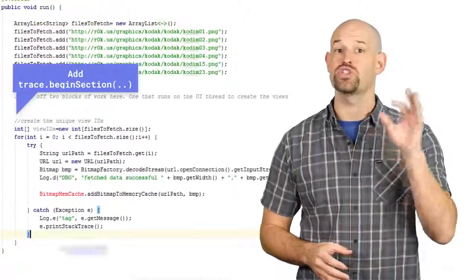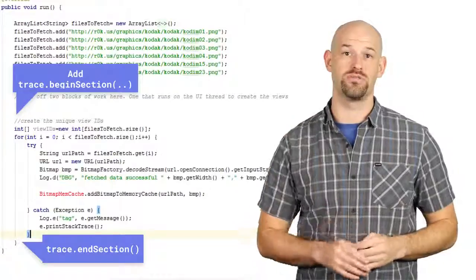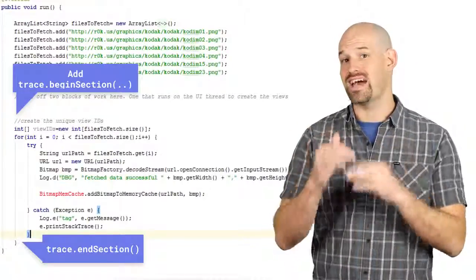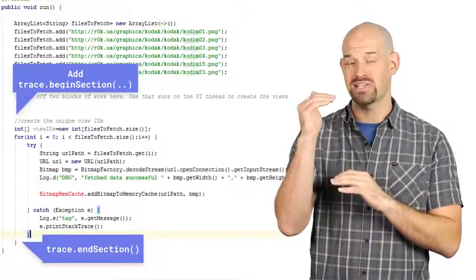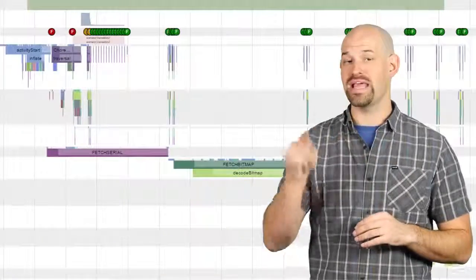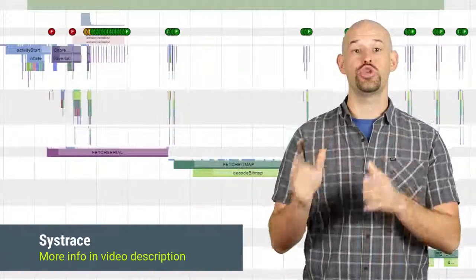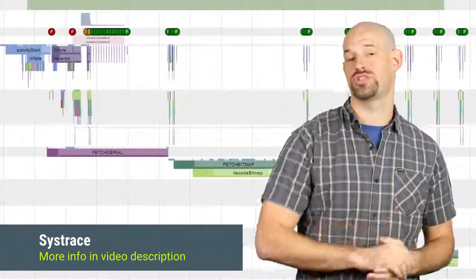And this can be done by inserting trace commands at various parts of your code. When you do this, the timing between the begin section and end sections will be logged and then displayed in your Systrace captures so that you can see more information about where your time is going.